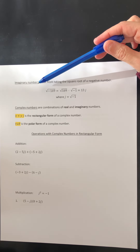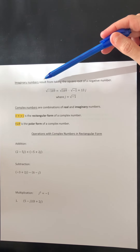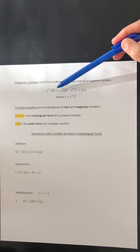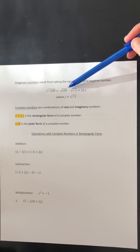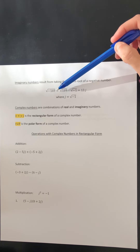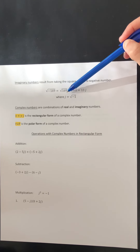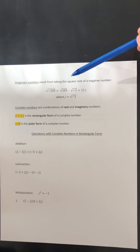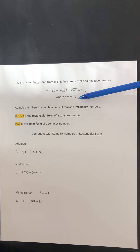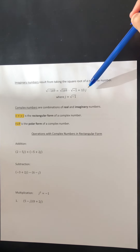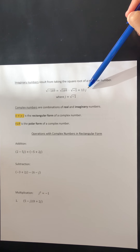The first definition is for an imaginary number. This number results when we take the square root of a negative number. For example, the square root of negative 169 can be written as the product of the square root of 169 and the square root of negative 1. The square root of 169 is 13, so we have 13 times the square root of negative 1. Here we define the j operator to equal the square root of negative 1, so this becomes 13j. The square root of negative 169 is written 13j, and that is considered to be an imaginary number.